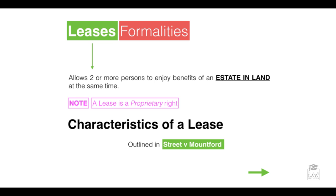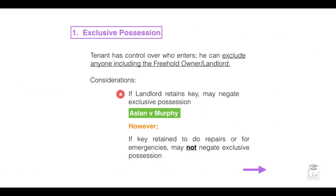There are several characteristics of a lease, and these have been outlined in the seminal case of Street v Mountford. The very first feature or characteristic — to determine if something is in fact a lease — is to identify whether there is exclusive possession. Exclusive possession is where the tenant has control over who enters the land or property, and has the ability to exclude anyone, including the freehold owner or the landlord.